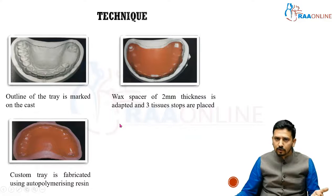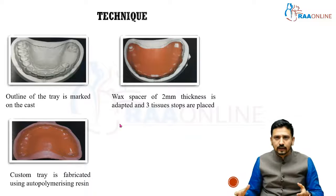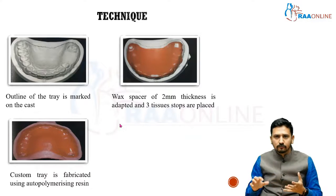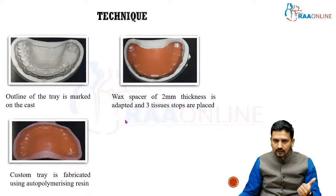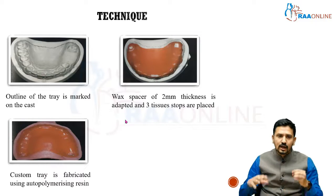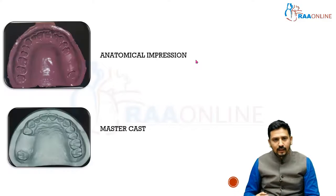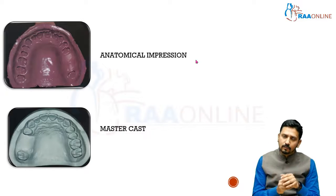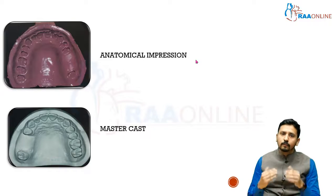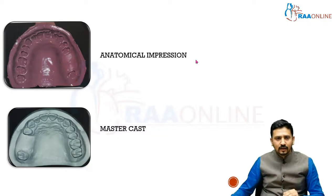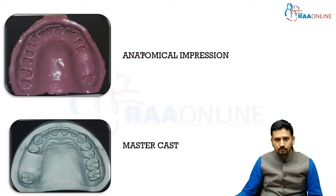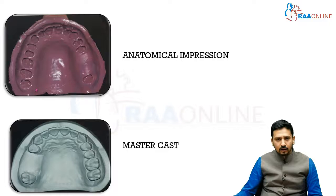On top of this spacer wax, auto-polymerizing resin is used to fabricate a custom tray. So, you make a preliminary impression with irreversible hydrocolloid or alginate, fabricate a cast, mark the outline of the tray on the cast, place a wax spacer of 2 millimeters thickness with 3 tissue stops — 1 in the anterior and 2 in the posterior — and then use auto-polymerizing resin to fabricate a custom tray. With this custom tray, you then make an anatomic impression using medium body polyvinyl siloxane impression material, and this is how your master cast will look.